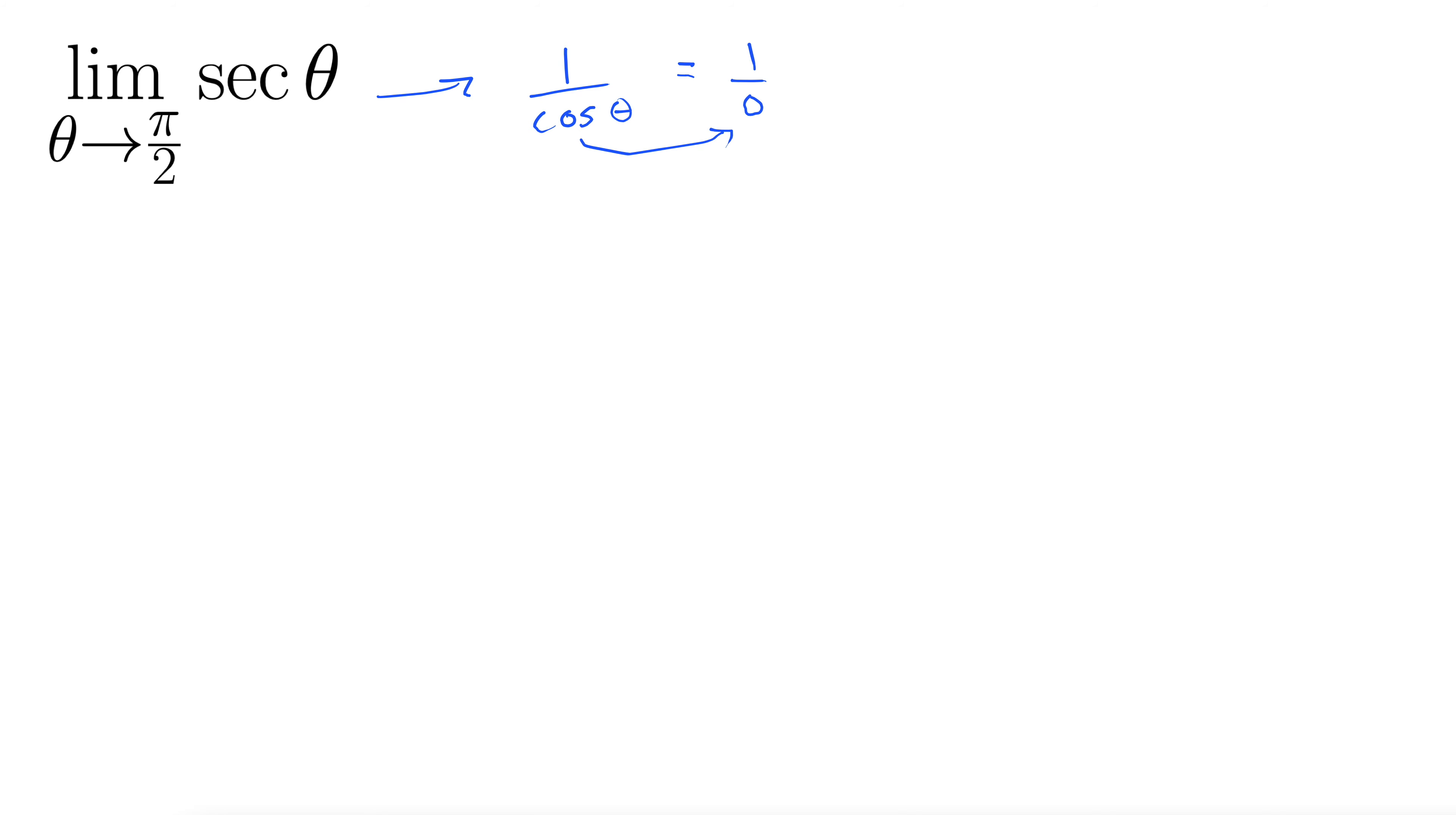Let's check out these one-sided limits. Let's start by approaching π/2 from the positive direction, which is from the right, of secant, which is 1 over cosine again. So let's look at what happens. We have 1 over cosine, so we know we're going off to some kind of infinity. We just need to figure out if it's plus infinity or minus infinity.